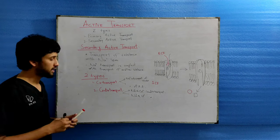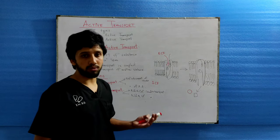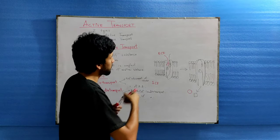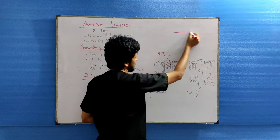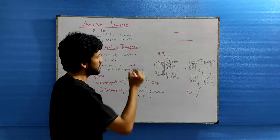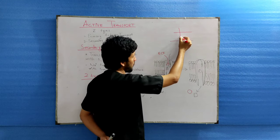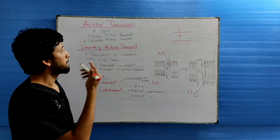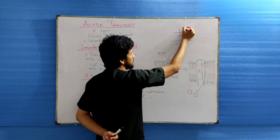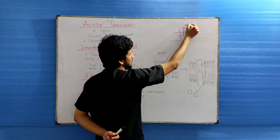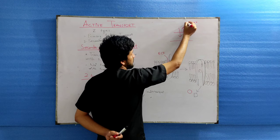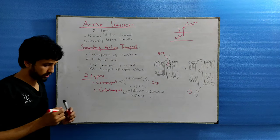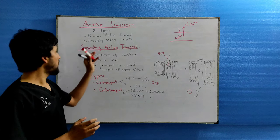In the countertransport mechanism, substances are exchanged in opposite directions. In the sodium-calcium countertransport, whenever there is movement of sodium from outside to inside the cell membrane, there is an exchange of another ion — either hydrogen or calcium — moving in the opposite direction. These ions are transported via the countertransport mechanism.